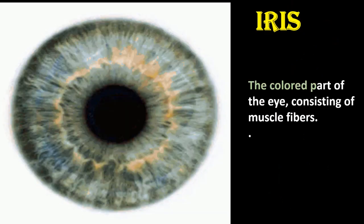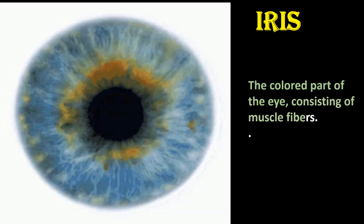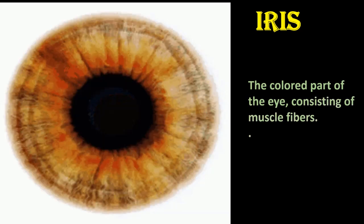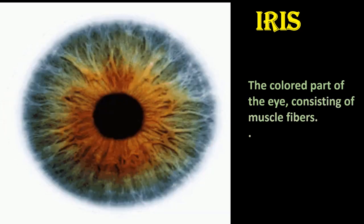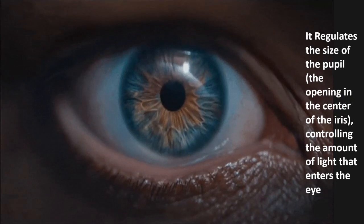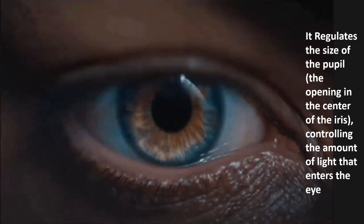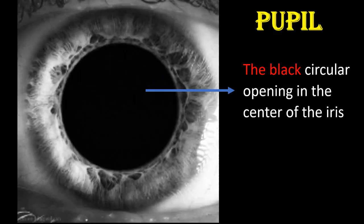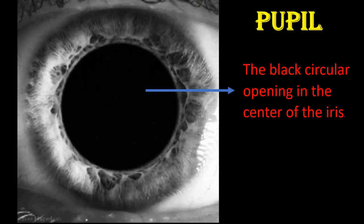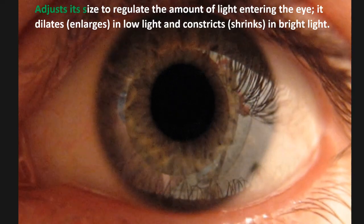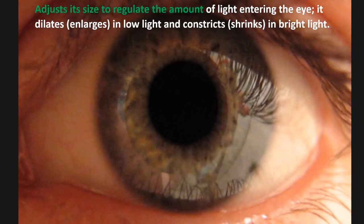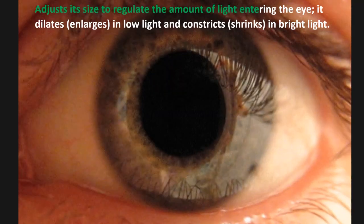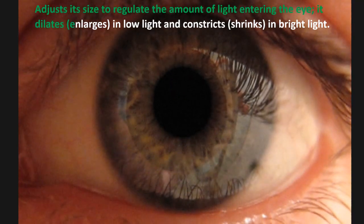Iris: The colored part of the eye, consisting of muscle fibers, it regulates the size of the pupil, controlling the amount of light that enters the eye. Pupil: The black circular opening in the center of the iris, it adjusts its size to regulate the amount of light entering the eye.